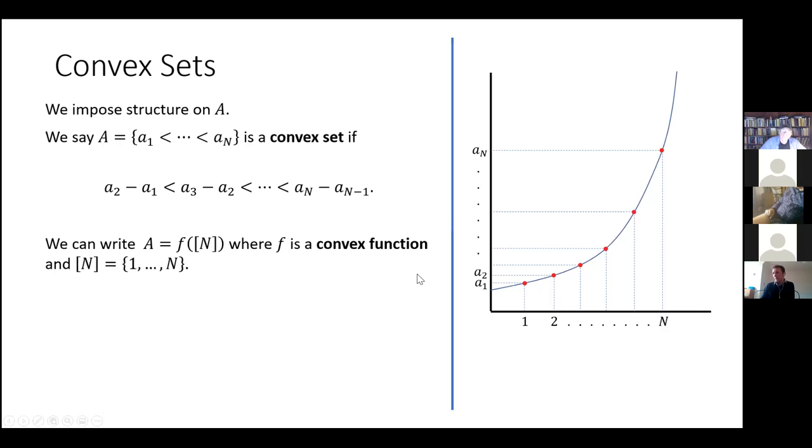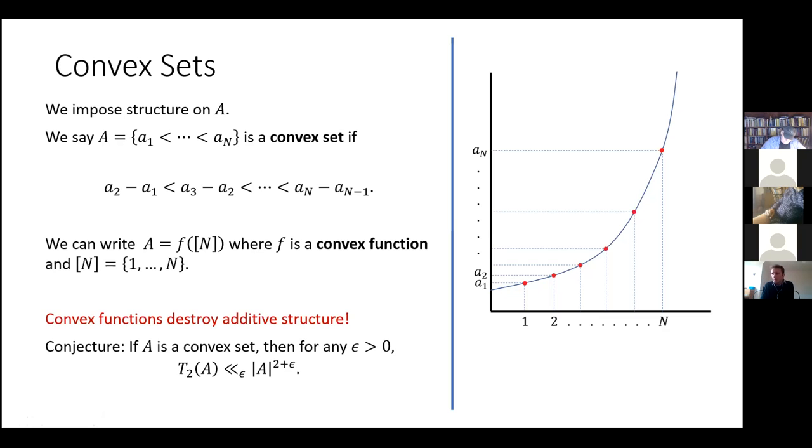Okay. Now, why would I want to write it like this? Well, the reason is because of a bit of sort of folklore philosophy and additive combinatorics, which is that convex functions destroy additive structure. And you'll remember from the previous slide that the canonical example of an additively structured set is the first N integers. And so if we hit our first N integers with a convex function, then we're going to get a set which we're expecting to be not very additively structured. And this is reflected in this conjecture, which is that if A is a convex set, then for any epsilon greater than zero, the T two energy of A is bounded above by size of A to the power of two plus epsilon. In other words, the T two energy is expected to be as small as it could possibly be. It's a very unstructured set.